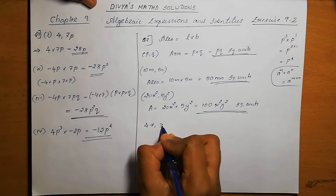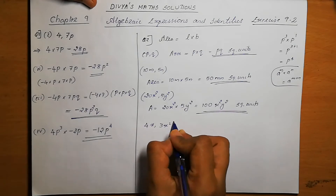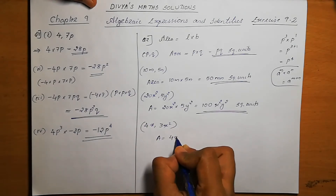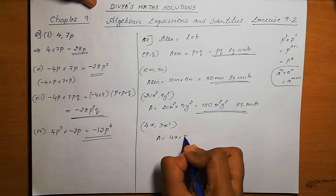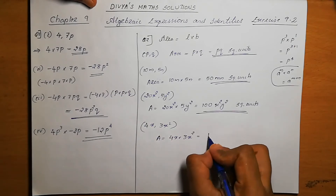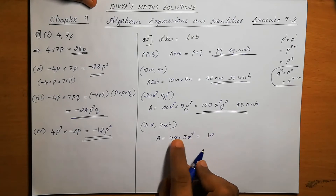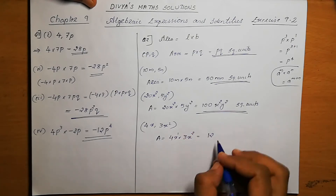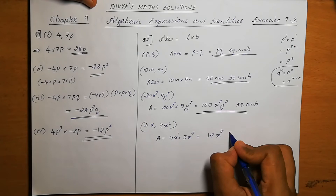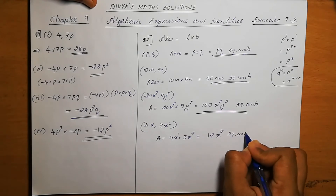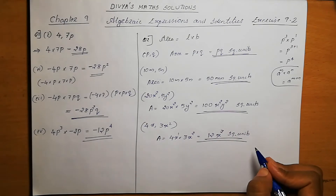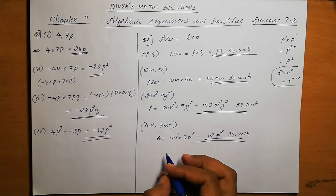Next: 4x and 3x square. 4x is the length and 3x square is the breadth. Area is equal to 4x into 3x square — that means 4 into 3 is 12. x into x square: x means x power 1, so powers add: 2 plus 1 is 3, giving x cube. So the area is 12x cube square units.